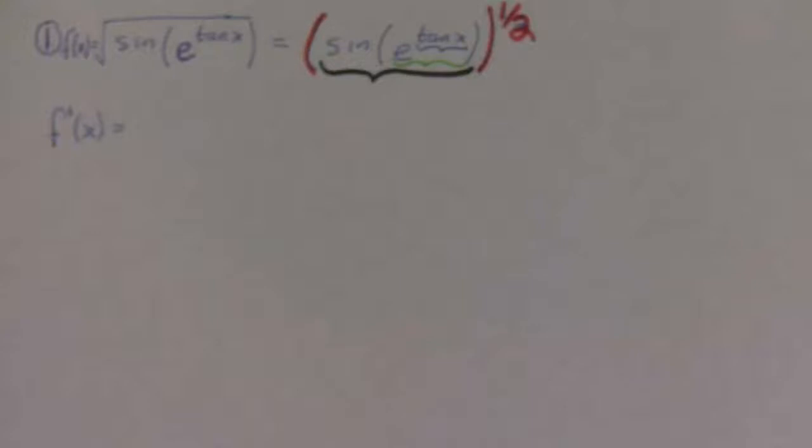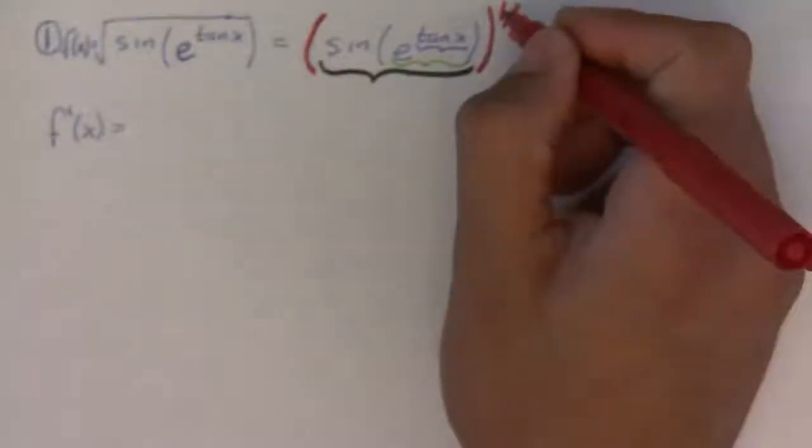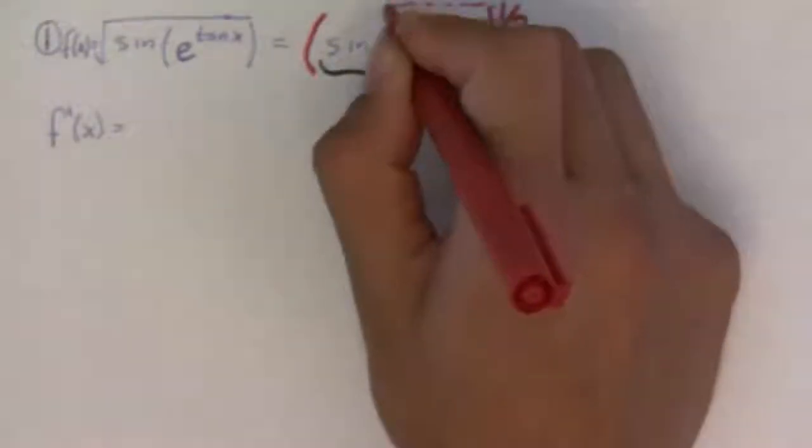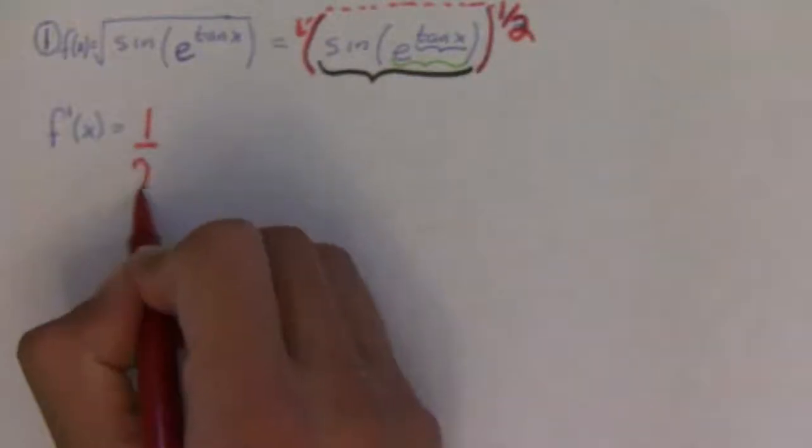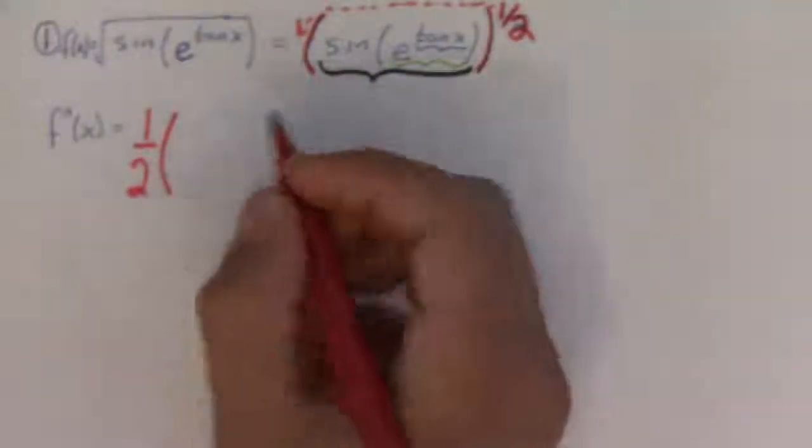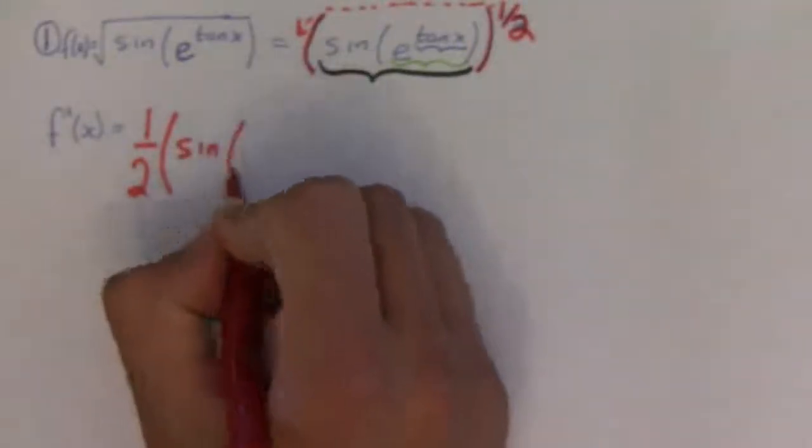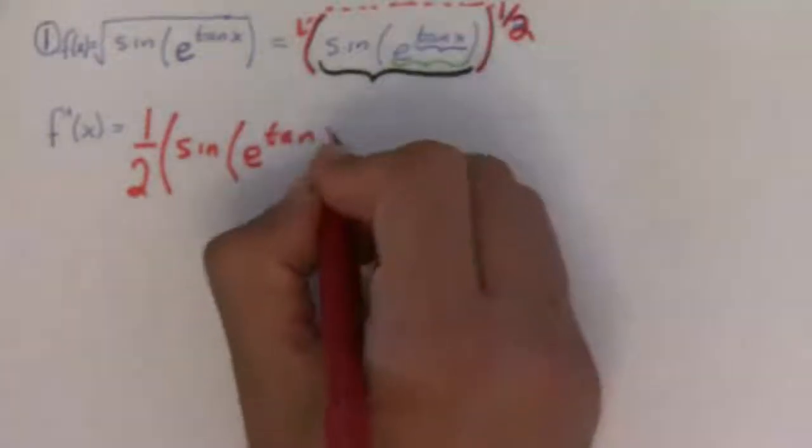And so, we're going to bust this out right now. Alright. So, the first thing we do is the most outside, that's the red one. So, we're going to use the power rule. We'll bring the exponent out in front. And remember, you always leave the inside alone. So, the inside is sine of e to the tangent x.